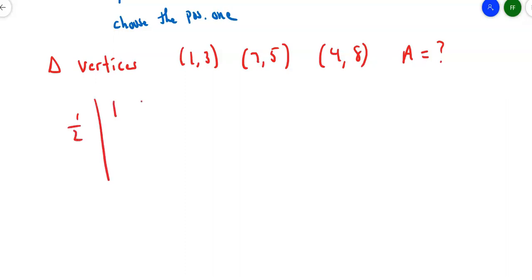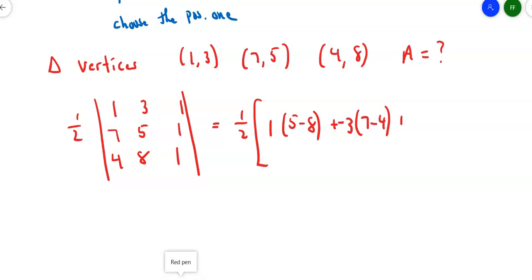Well, my determinant goes 1, 3, 1, right? x1, y1, z1. Now, the 7 has to be on the far right. So that's the 2. And the 4 goes in between them. But you realize that if I had not put the points in that order and you weren't careful about them, you might have put the 4, 8, 1 as the second row and the 7, 5, 1 as the last row. And you realize that switching the order of rows changes the sign of the determinant. All right, let's see what this gives me. This gives me 1 half times 1 and then block out row 1, column 1. I get 5 minus 8 plus 3 times 7 minus 4, except that should be a minus. And then plus 1 times 56 minus 20.